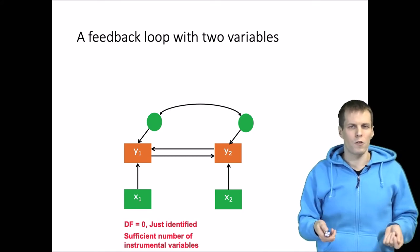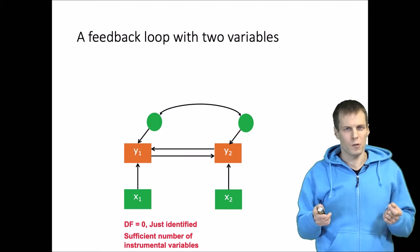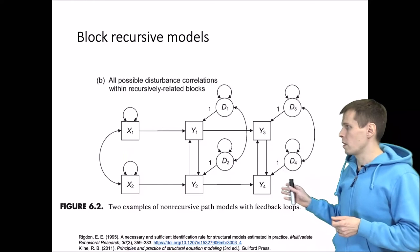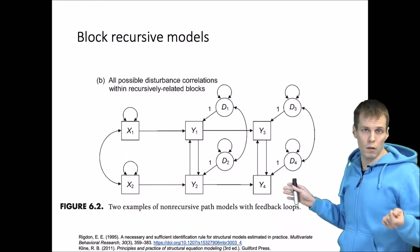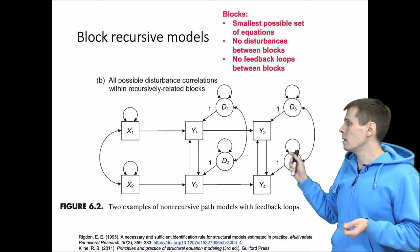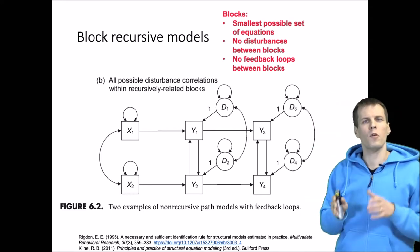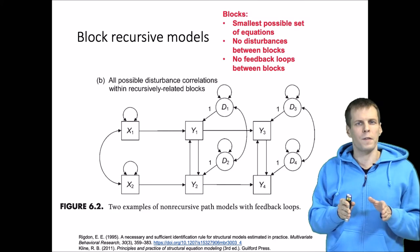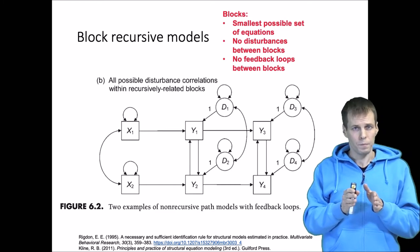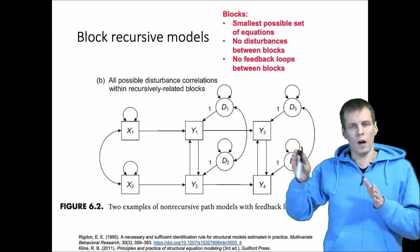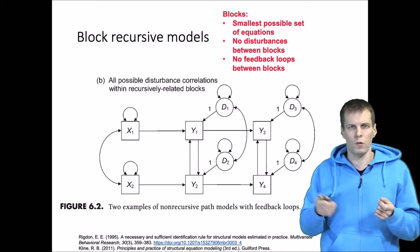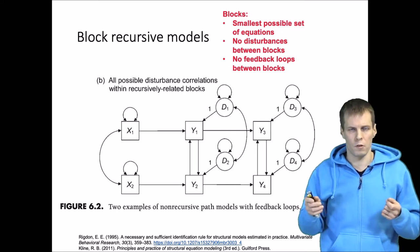Let's take a look at larger models. We rarely have models with just two endogenous variables. This example has four endogenous variables — y1, y2, y3 and y4 — and this is what we call a block recursive model. A block is the smallest possible group of equations that does not have correlations between equations from other blocks, and all effects from one block to another go unidirectionally with no feedback loops.